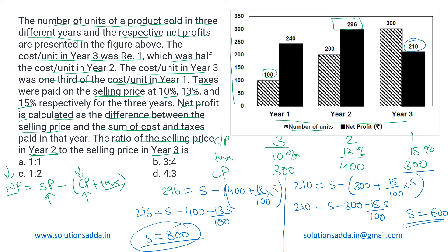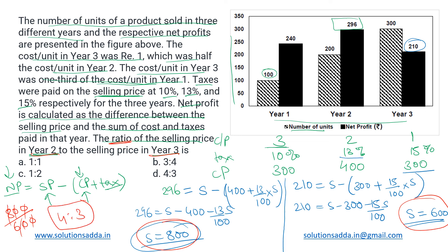So in year two the selling price is 800 rupees and in year three it is 600 rupees. We wanted to find the ratio of selling price in year two to year three: 800 to 600 simplifies to 4 is to 3. So that is our answer — option D.